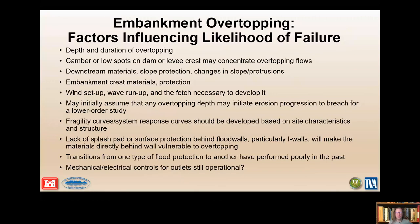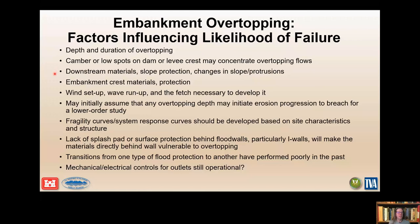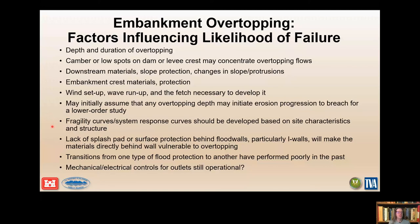Important factors that influence the likelihood of overtopping failure include depth and duration, which are really the key ones. Next are low spots and concentration of flows. Following those are materials — in heterogeneous materials you've got a shell with coarse material and slope protection, then a core. Changes in those materials are particularly important to capture, as well as changes in slope and embankment properties moving downslope. Fetch and wind setup are important to capture. Lastly, fragility curves and system response curves are really site-specific — you must use all your geometry at your site of interest to develop those response curves.